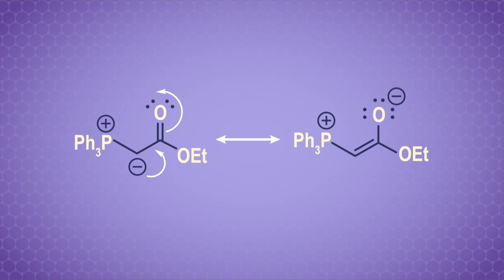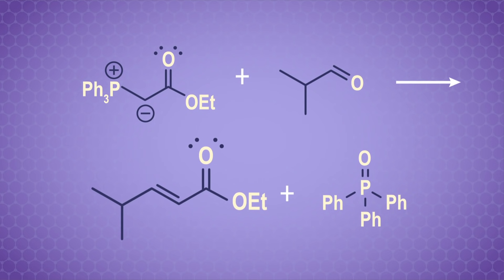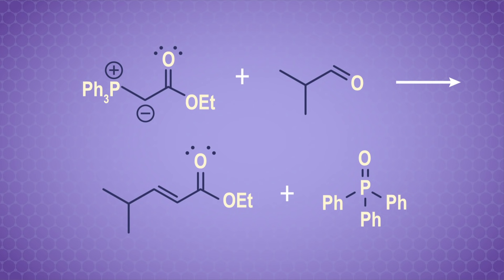If we can draw resonance structures for the carbanion in our Wittig reagent, we have a molecule called a stabilized ylide. This reagent has slightly lower reactivity and gives us the E-alkene instead. Since this reaction occurs more slowly, we have time to form the more stable E-alkene as the major product, as opposed to the sterically crowded Z-alkene favored by the standard Wittig reagent.